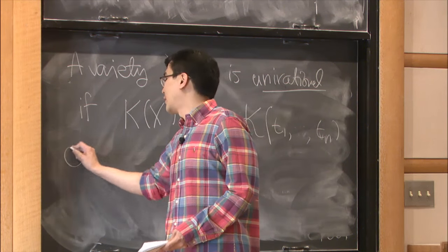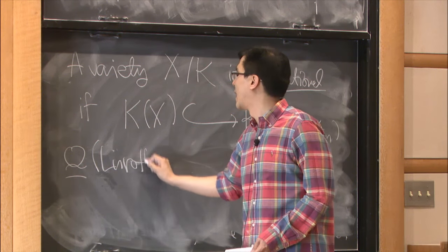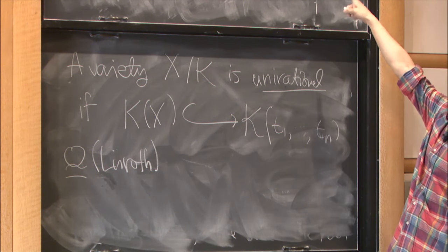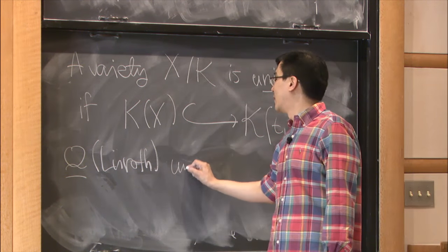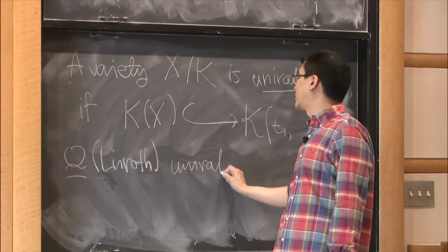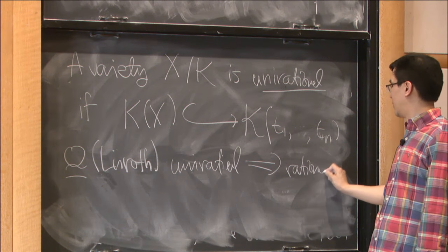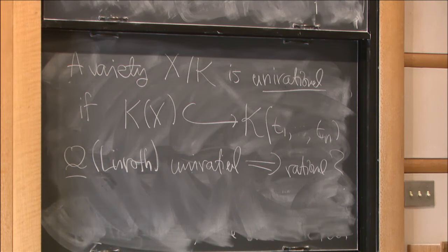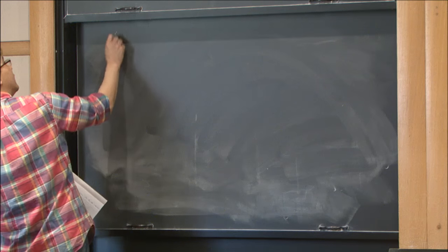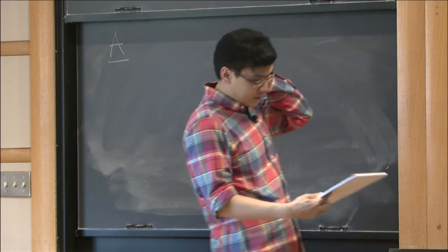And there is a related notion called unirationality. In other words, it admits a dominant rational map from P^n. So because I'm assuming that k is infinite, the two definitions are equivalent. So if k is finite, I mean the two will a priori be different. So a classical question of Lüroth is, so of course if you have a rational variety, it's going to be unirational. So the question is, is the converse true?